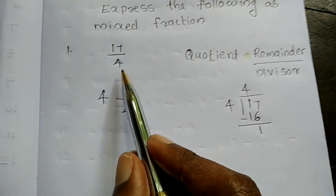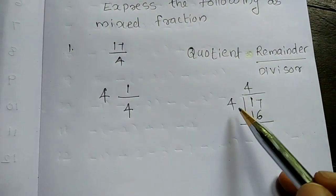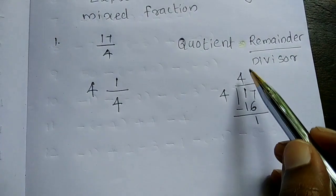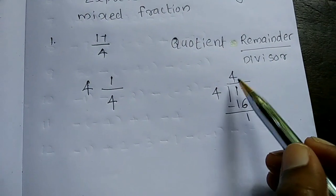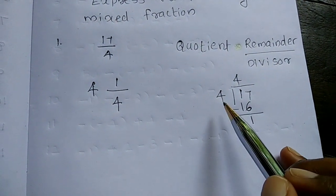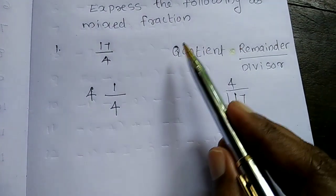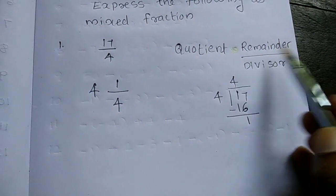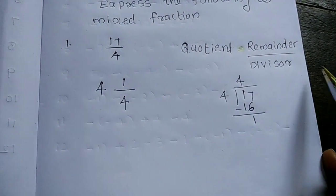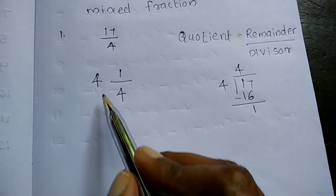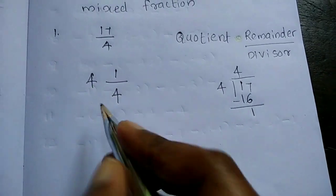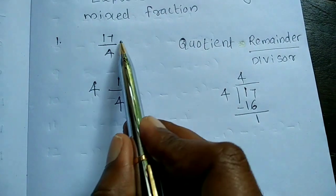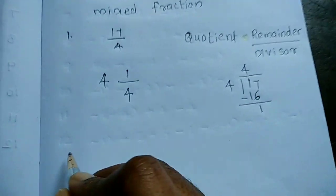17 divided by 4 gives us the mixed fraction: quotient 4, remainder 1, divisor 4. So 4 and 1/4 is the mixed fraction of 17 by 4.